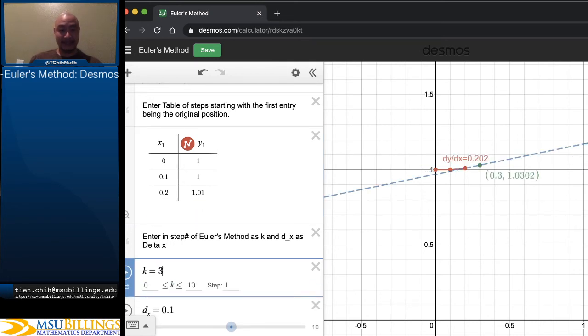And I can move on to the next step. So I've got these two. And now at (0.2, 1.01), my tangent slope is 0.202. And so my next x goes up by another 0.1, but my next y is now 1.0302.